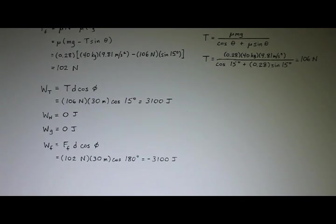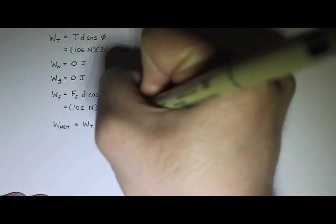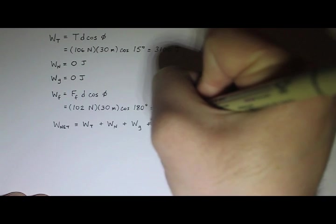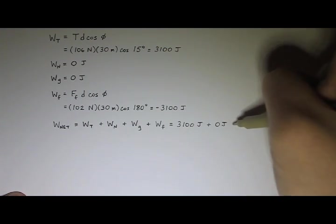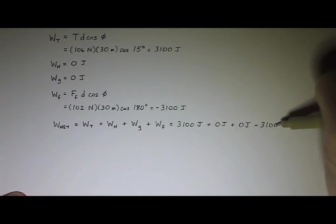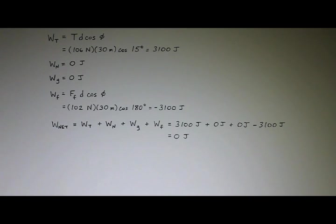Now the whole point of this was to calculate the net work. To get the net work, you just add up all the individual works: work from tension plus work by the normal force plus work by the weight plus work by friction. That's 3,100 J + 0 J + 0 J − 3,100 J = 0 joules. As we'll see later on, that's not a coincidence — there's a reason why it ended up being 0 joules. But for now, just make sure you understand how to calculate the net work: you add up the individual works just like regular numbers, and that's your answer.